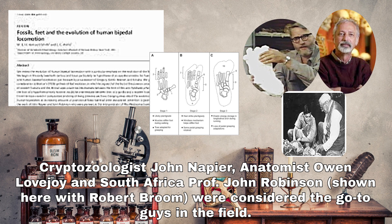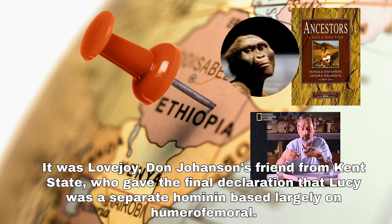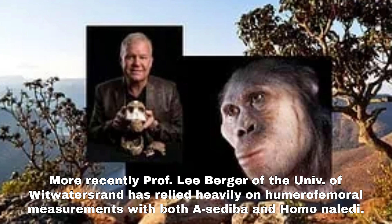Cryptozoologist John Napier, anatomist Owen Lovejoy, and South African professor John Robertson were considered the go-to experts in the field. It was Lovejoy, Don Johanson's friend from Kent State, who gave the final declaration that Lucy was a separate hominid based largely on humeral femoral index. More recently, Professor Lee Berger of the University of Witwatersrand has relied heavily on humeral femoral measurements with both Australopithecus sediba and Homo naledi.